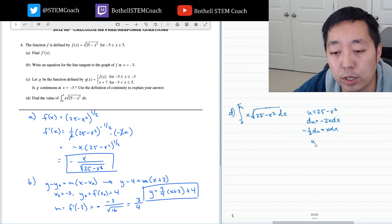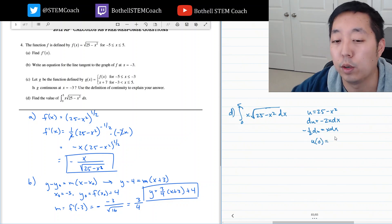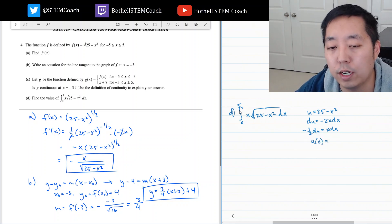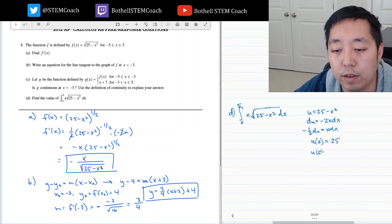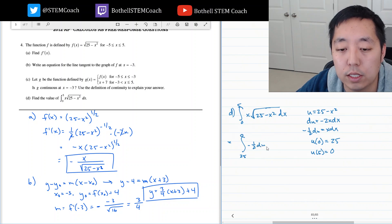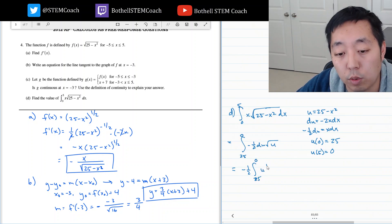And then last is I want to transform the bounds. Because I prefer transforming the bounds rather than going back into x. u of 0 is 25. And u of 5 is equal to 0. So then this becomes the integral from 25 to 0. Because the 0 got converted into 25 and the 5 got converted to 0. I have a negative 1 half du. That's the x dx times the square root of u. Can bring the negative 1 half integral 25 to 0. u to the 1 half du.